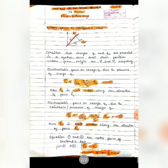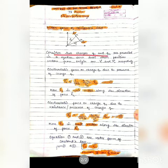Two charges q1 and q2 are separated by a small distance r, and the position vectors of both charges are vector r1 and r2 respectively.